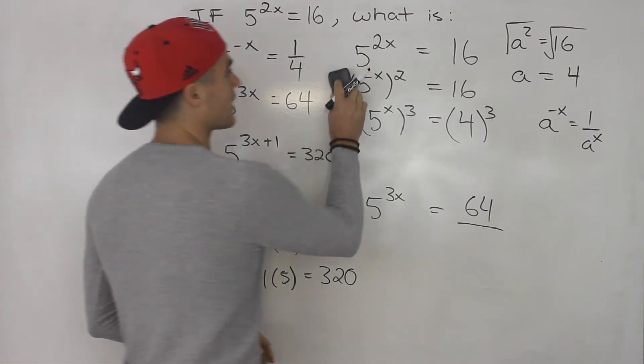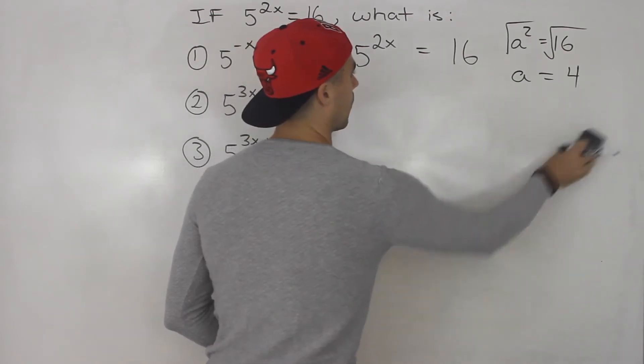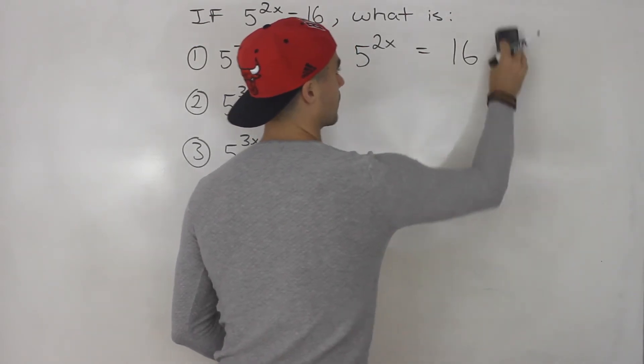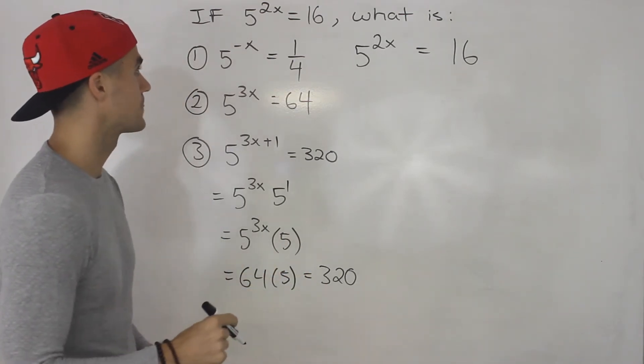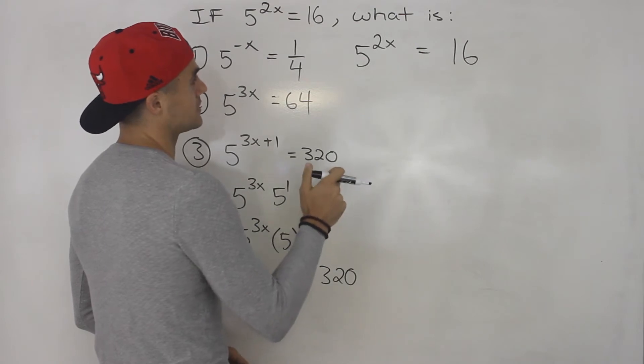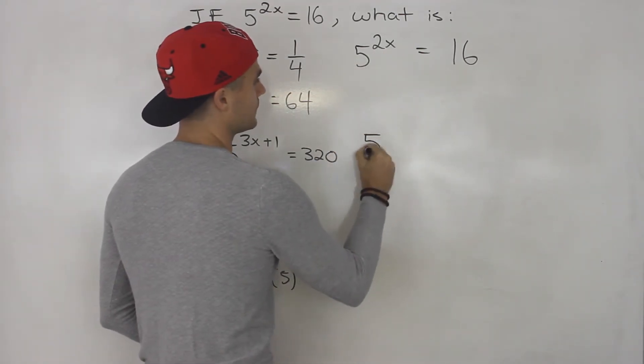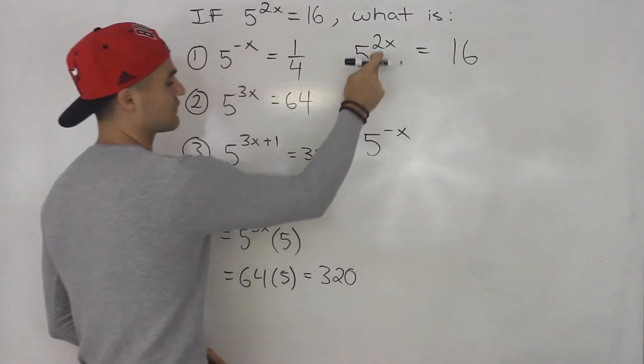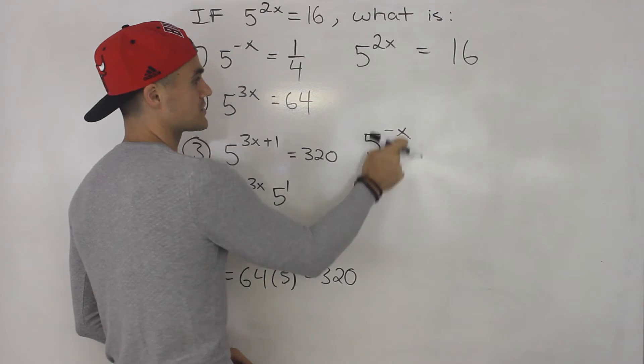Now there's actually another way to do this, but it requires skills that we haven't learned yet. We're actually going to learn them in the next section, rational exponents. So technically, you can directly go from here to here. So how, instead of getting 5 to the x, having that middle point, you can just go from here to here.